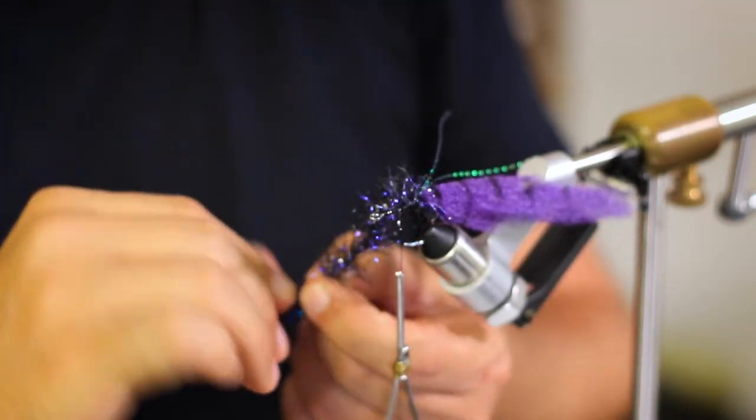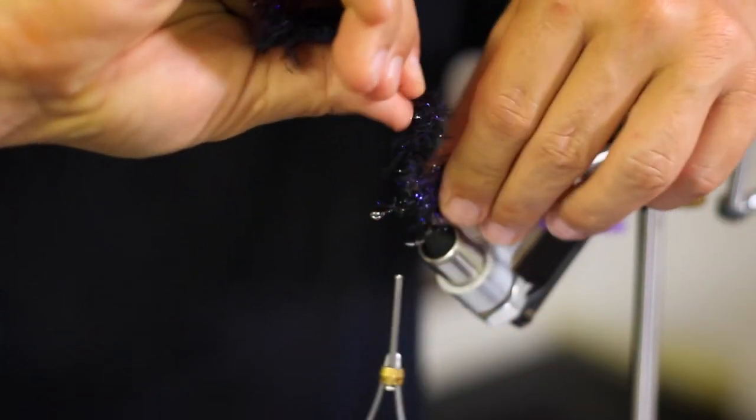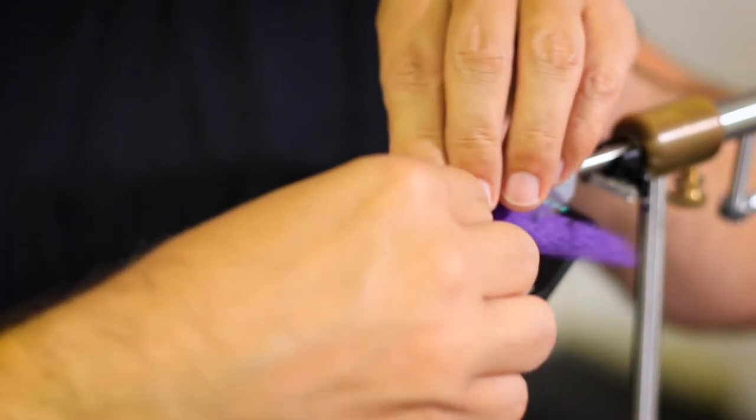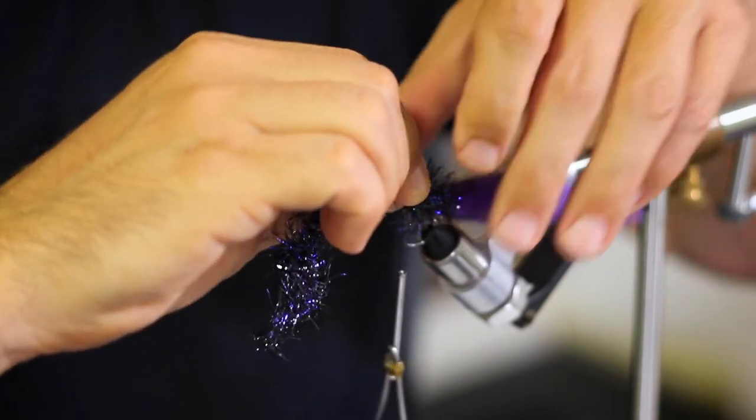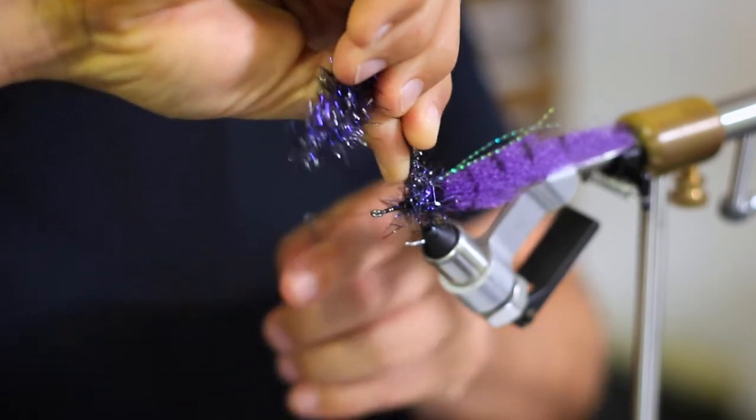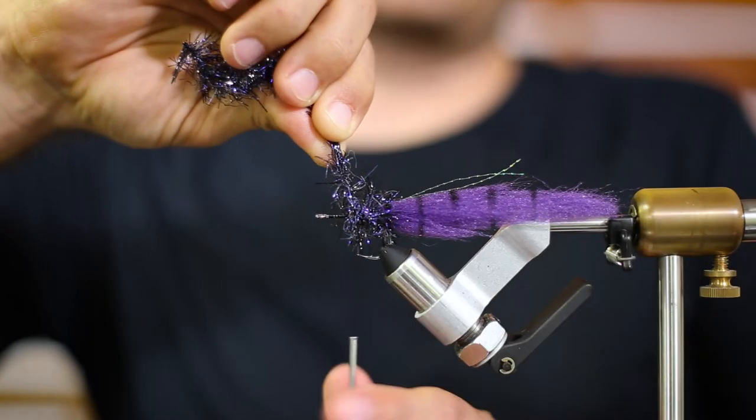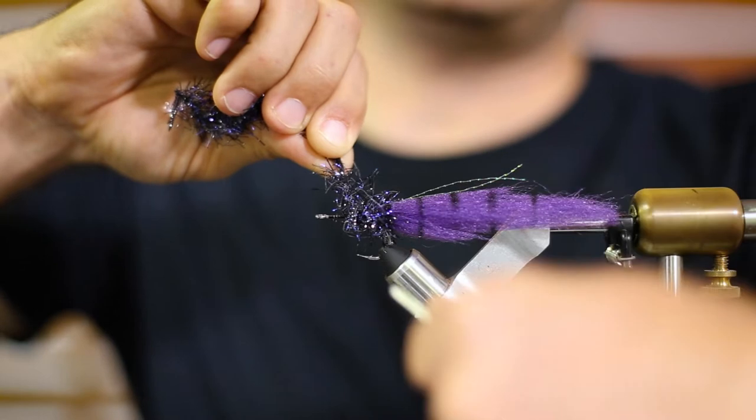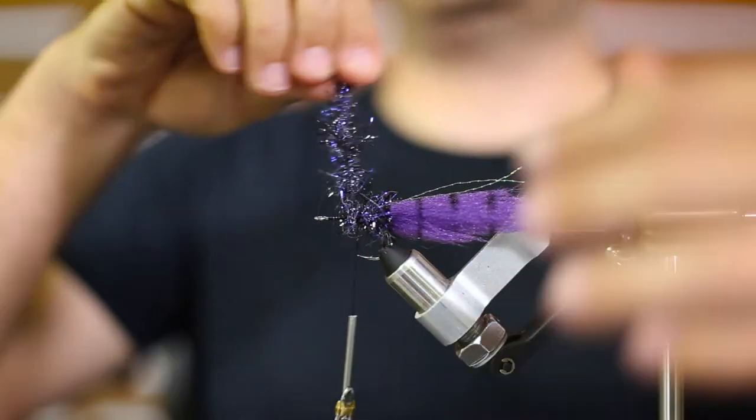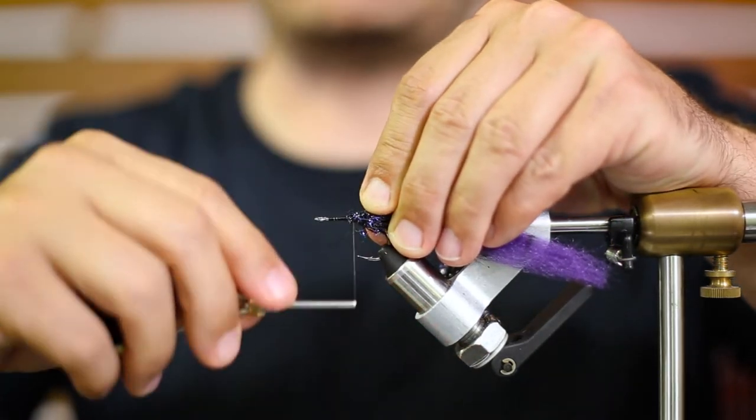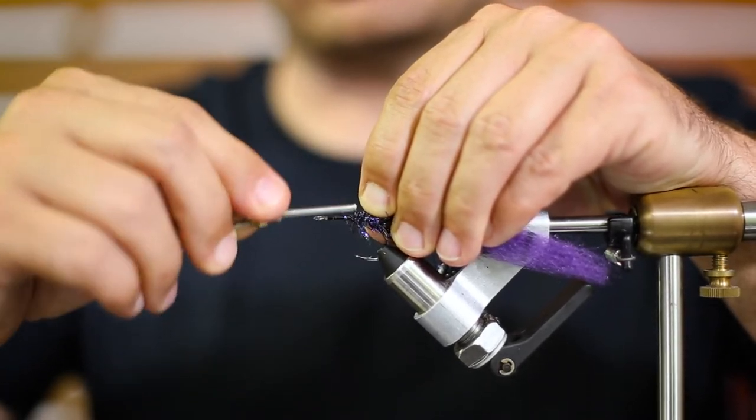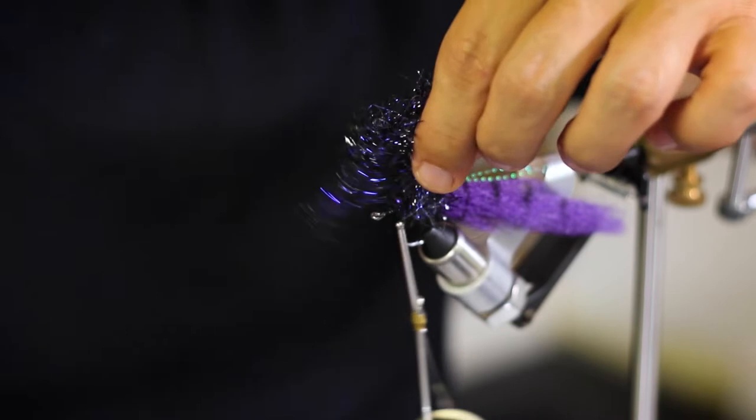You just want to get a couple wraps in. This stuff can build up bulk really fast. You just need a couple. Now I'm going to take the thread on the other side of the material to lock it down. Tie down nice and tight. Bend it back. Just going to tie down right on top of it. Make sure it's nice and secure. It's not going to go anywhere. We're going to cut it off.